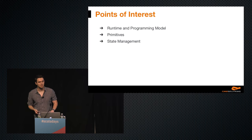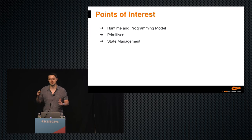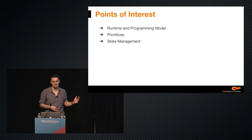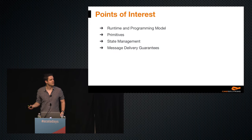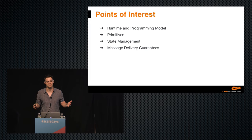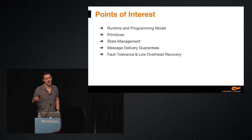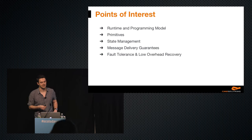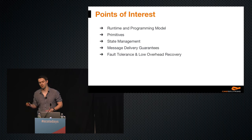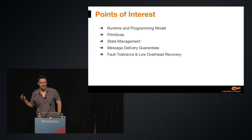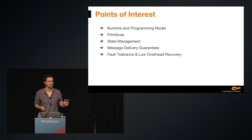And state management: most applications have stateful processing logic that requires state. The platform should allow us to maintain, access, and update state information. For message delivery guarantees, we have a couple of classes: at most once, at least once, and exactly once — another important thing to consider. Failures can and will happen at various levels, like network partitions, disk failures, or nodes going down, and our platform should be able to recover from all such failures and resume from the last successful state.